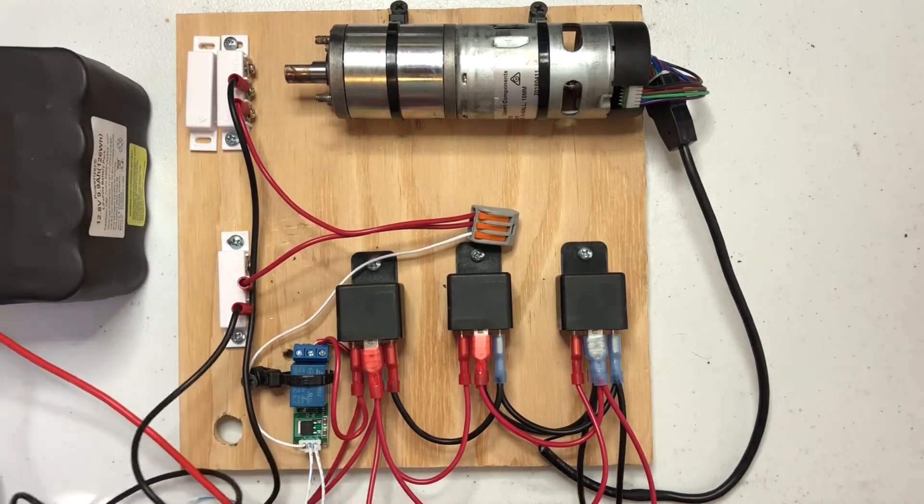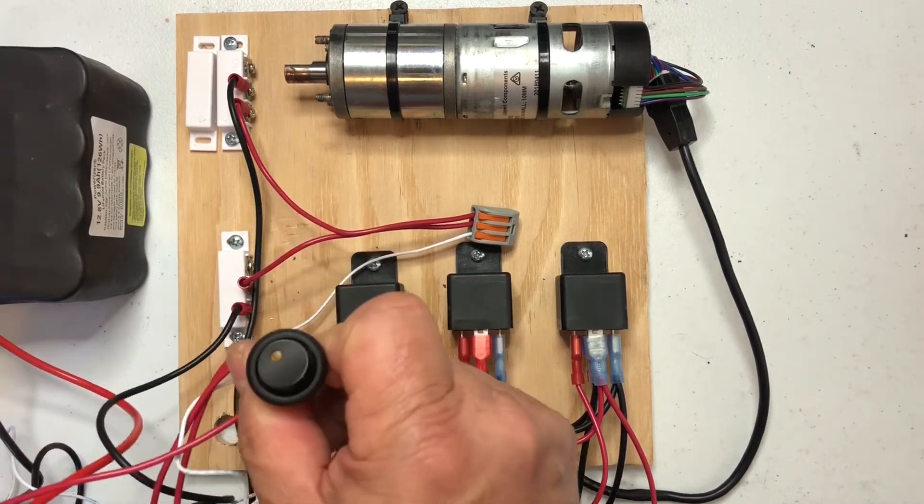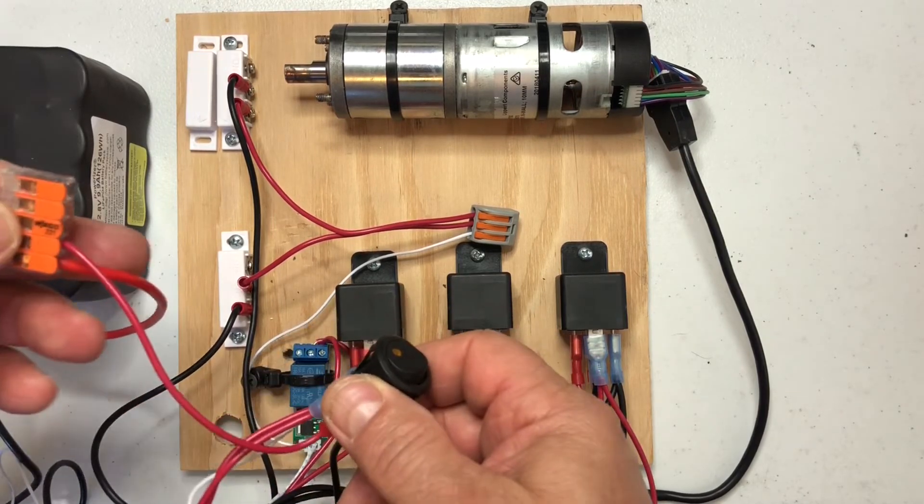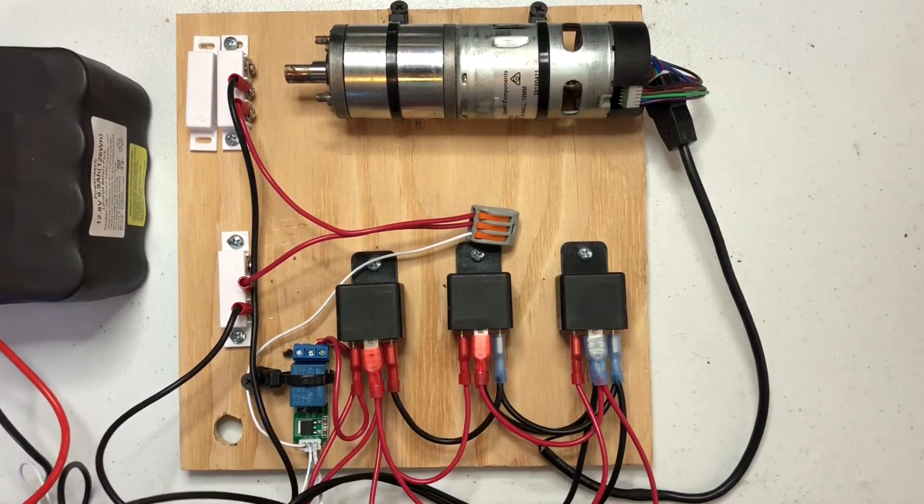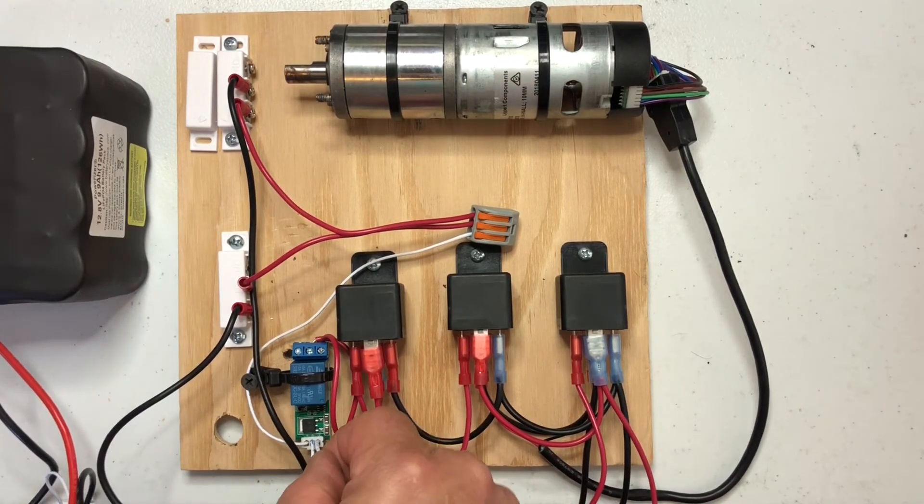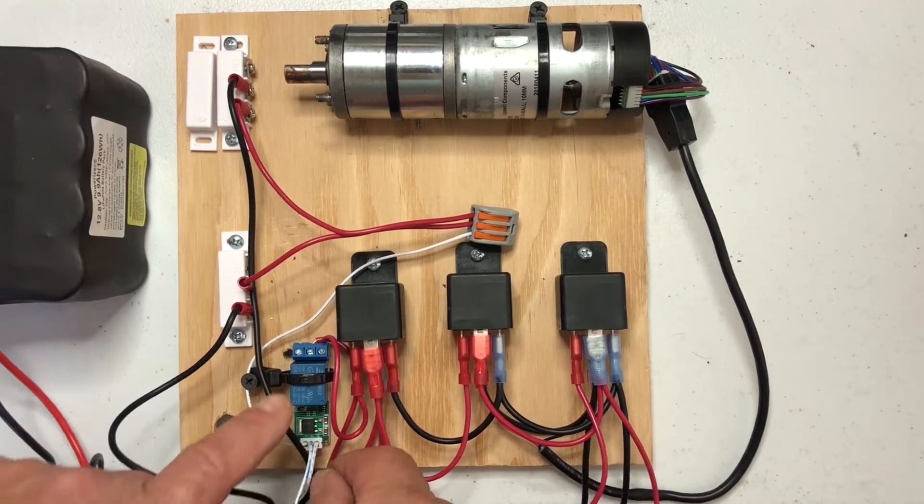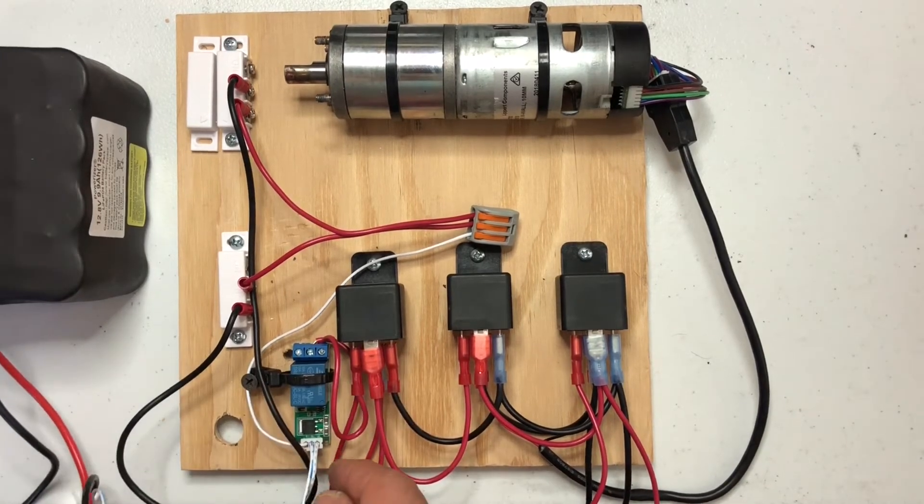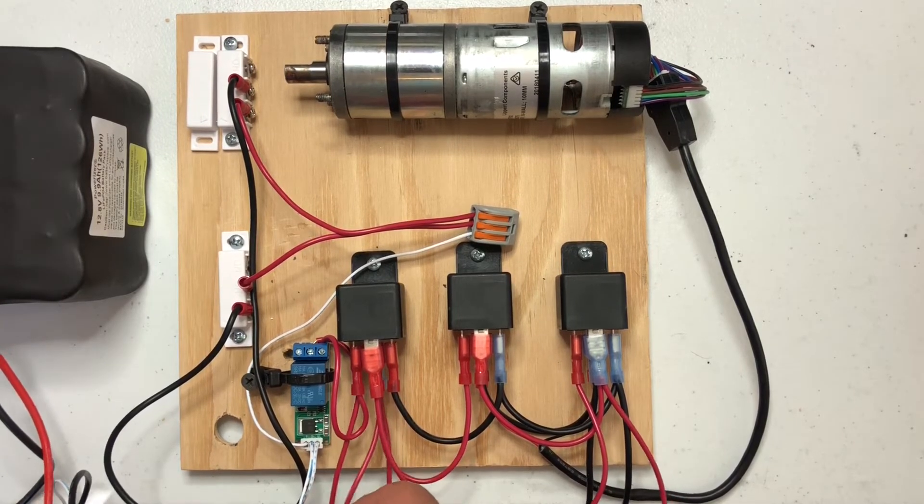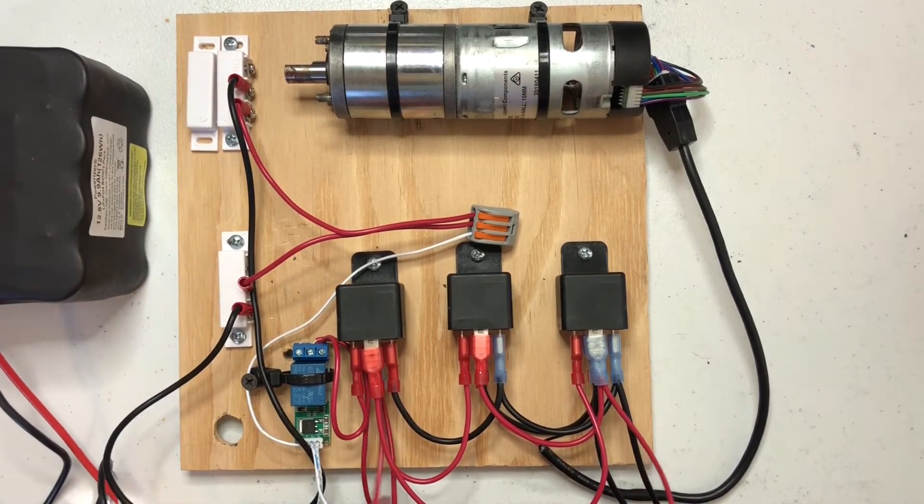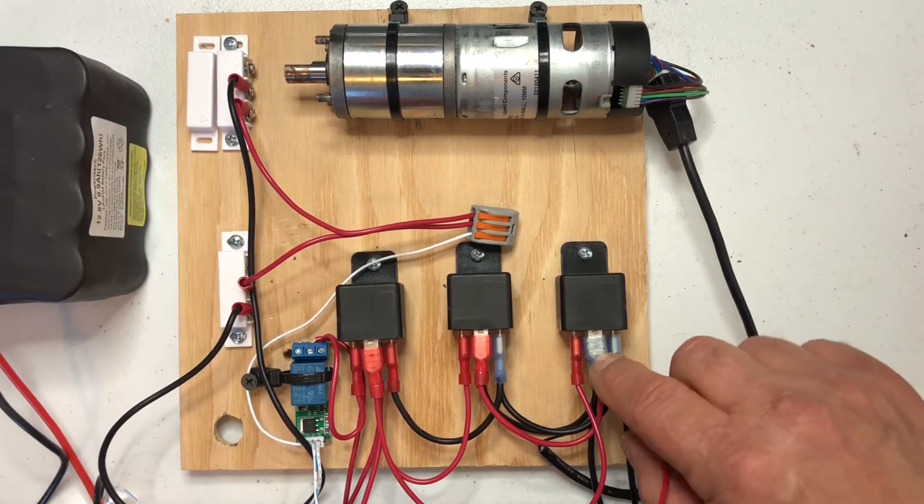And then I've got to feed this relay which is the center post here. Okay so that's all our negative. The positive side I'm going to a switch. You gotta have some way to turn this thing on and off. So positive from the battery to the switch and then out of the switch we gotta feed the V side of this relay. We've got to feed the common port to this relay and then the other side we're feeding just like in the diagram here.